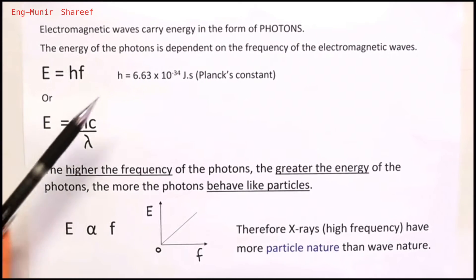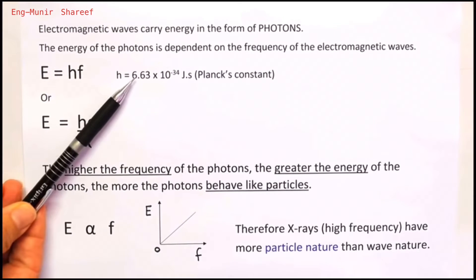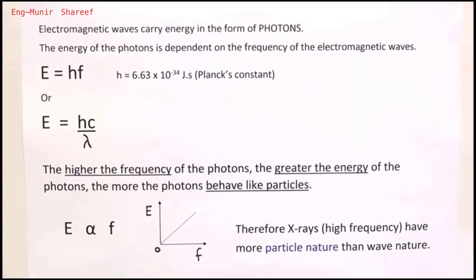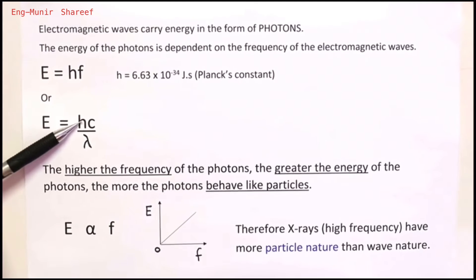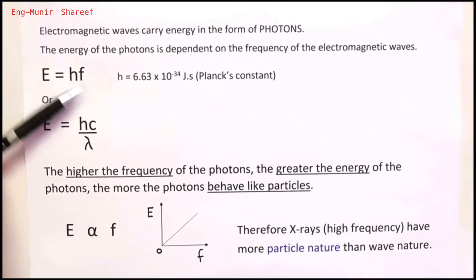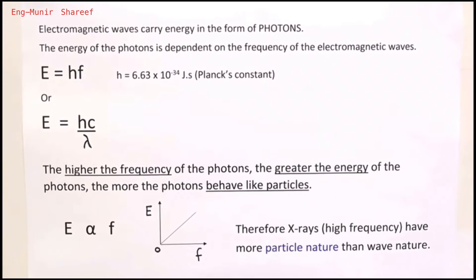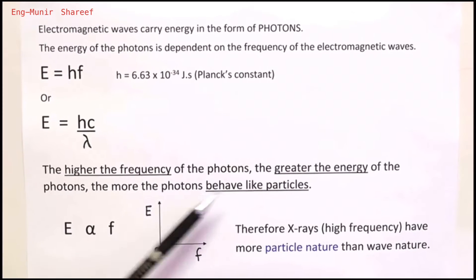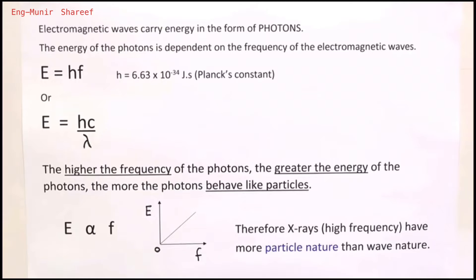H is Planck's constant: 6.63 times 10 to the negative 34 joules times second — please remember it's not joules per second. You can also write the equation as Planck's constant times the speed of electromagnetic waves divided by the wavelength, because frequency equals speed divided by wavelength. The higher the frequency of the photons, the greater their energy, and the more the photons will behave like particles. Gamma rays, having the highest frequency, will have the highest energy and behave the most like particles.